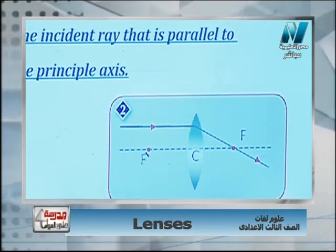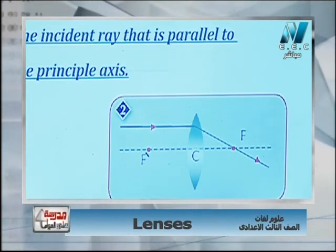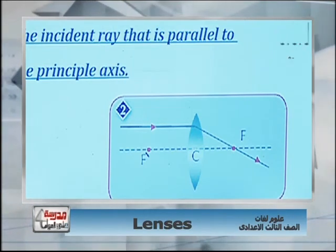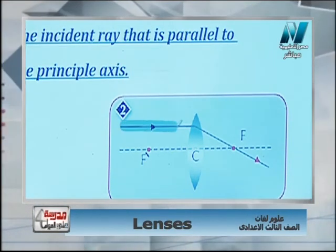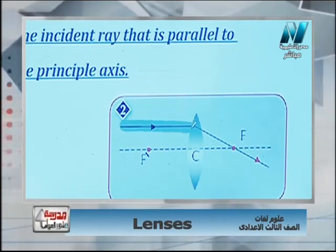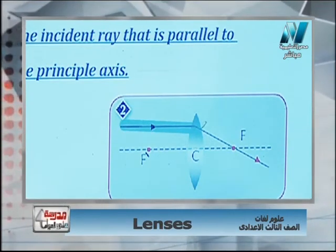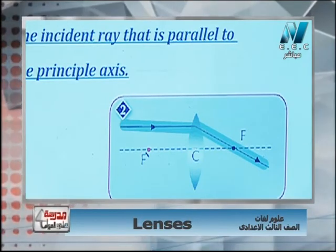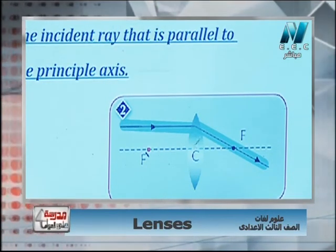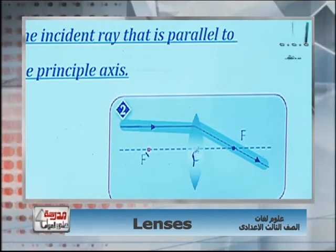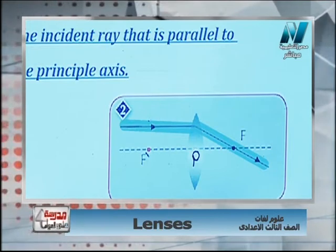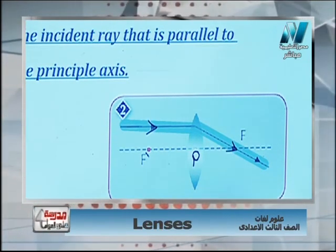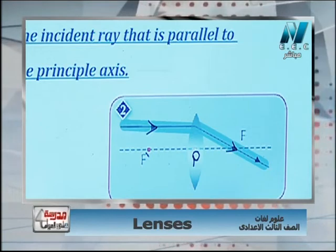Rule number two: if the light ray is parallel to the principal axis, as we see here, in this case the light will refract and pass through the focus.